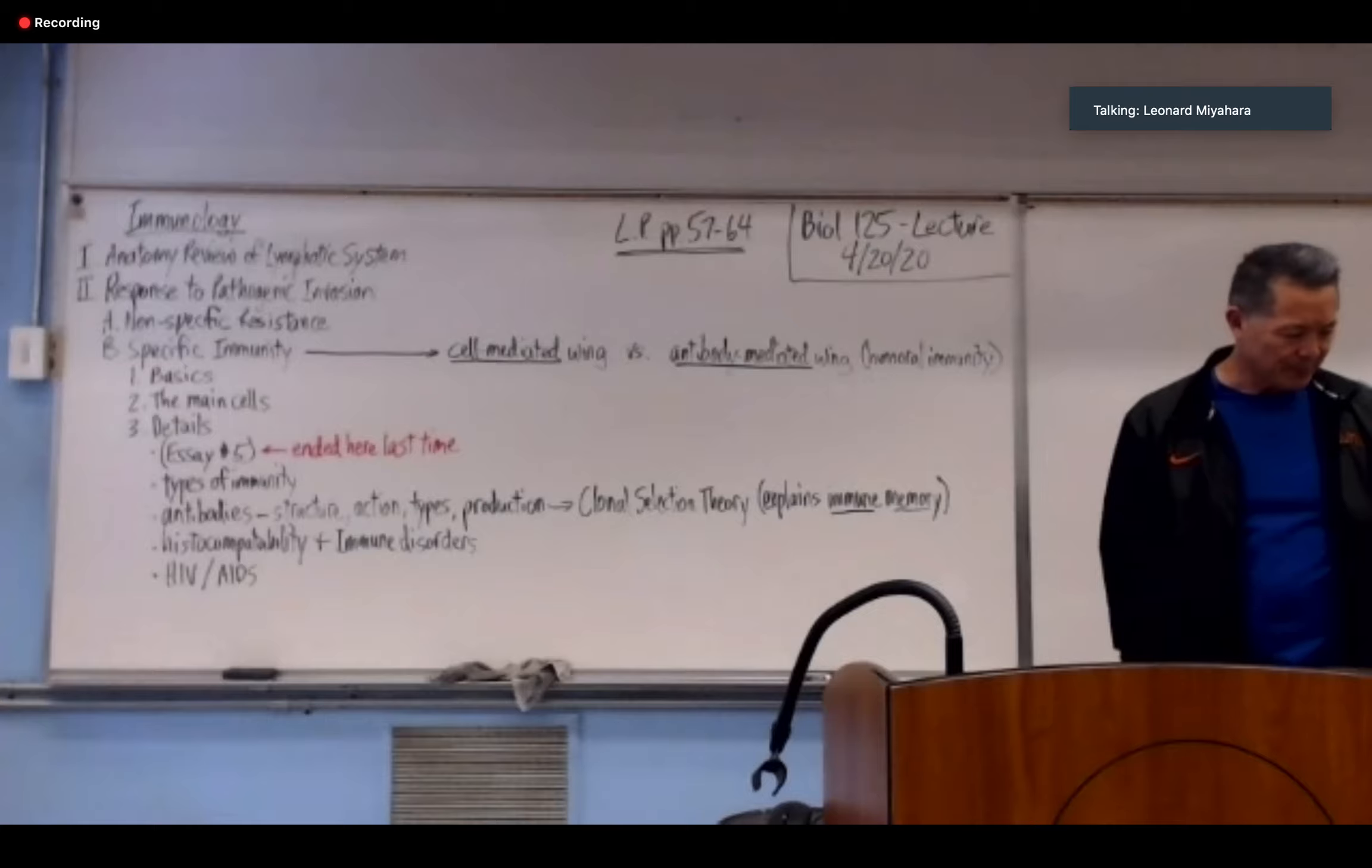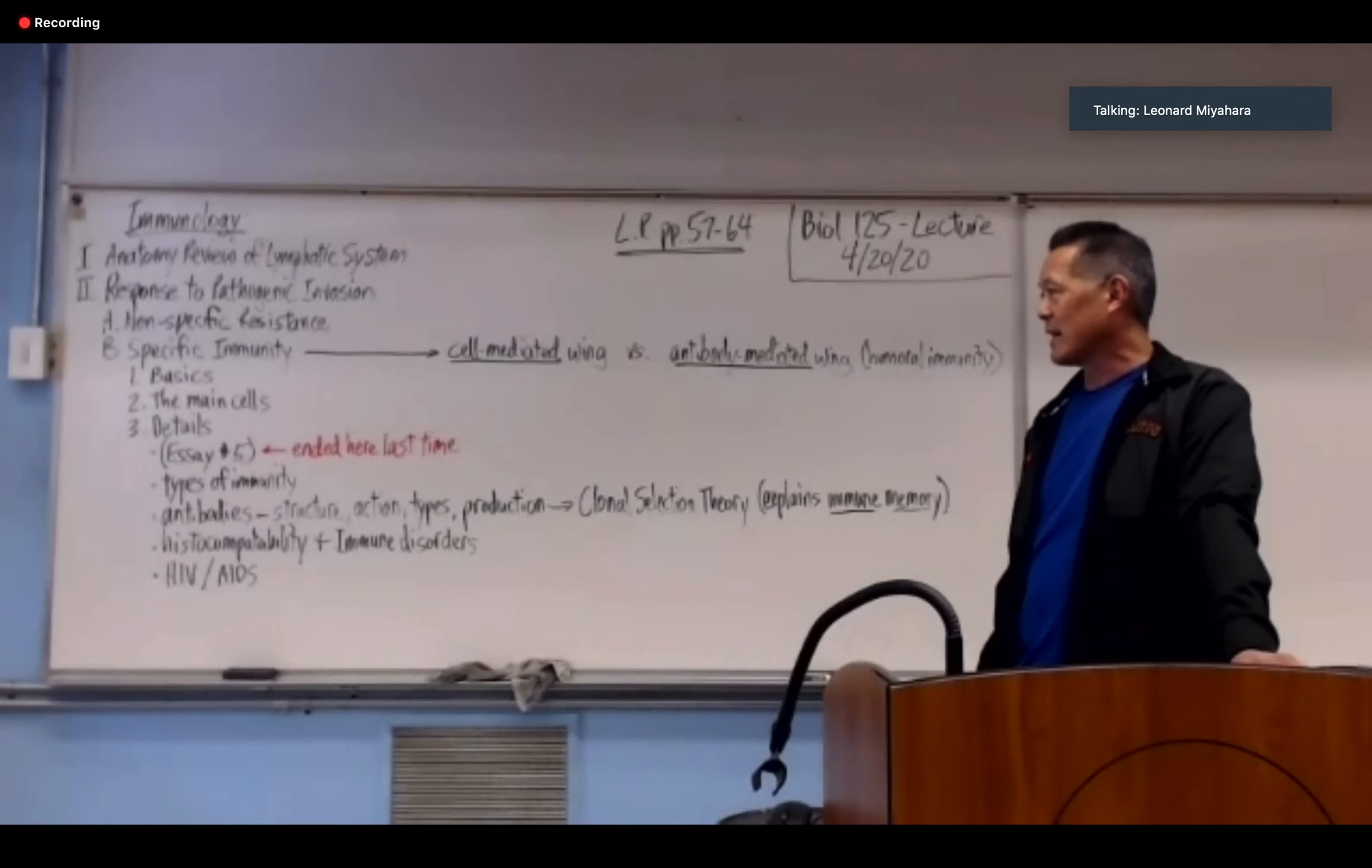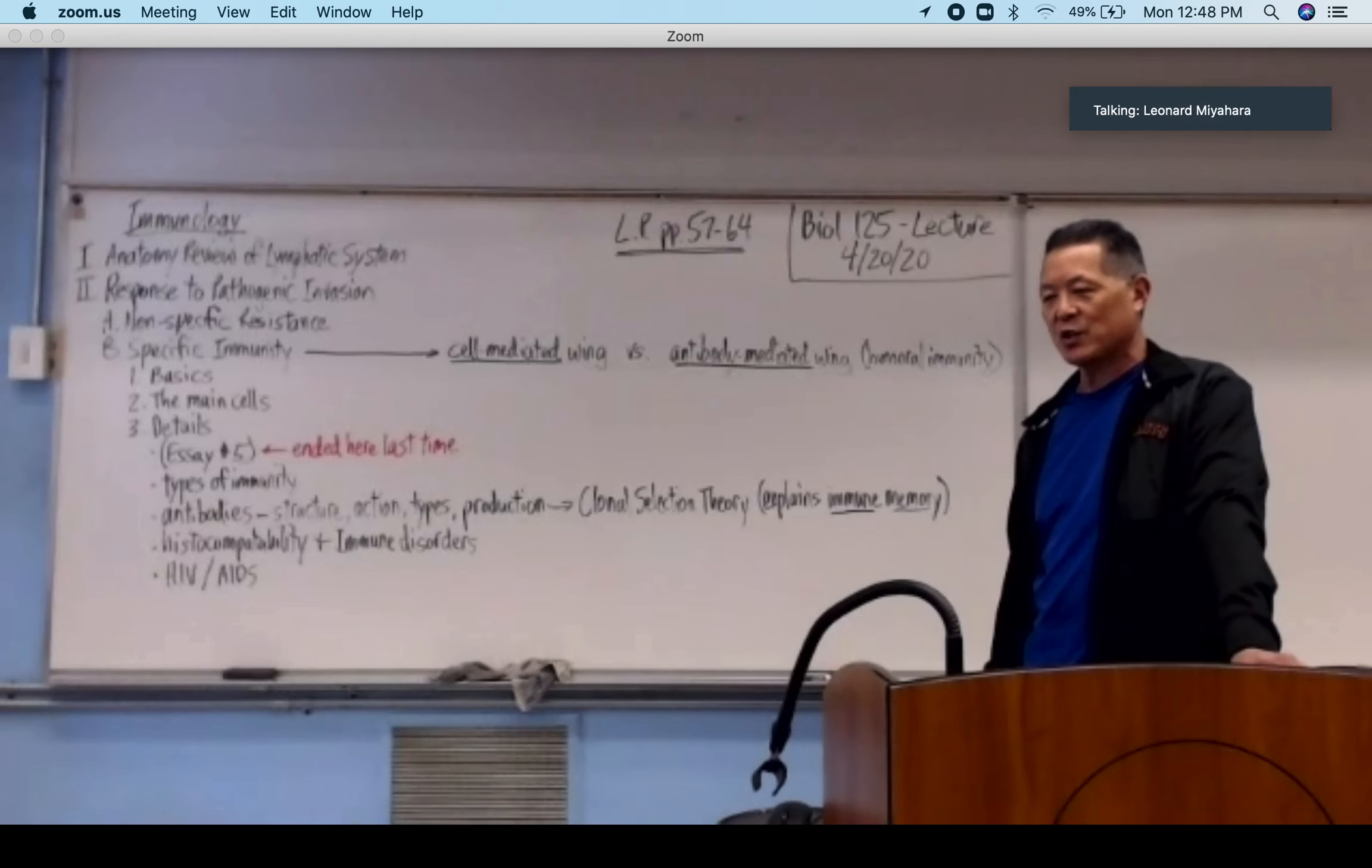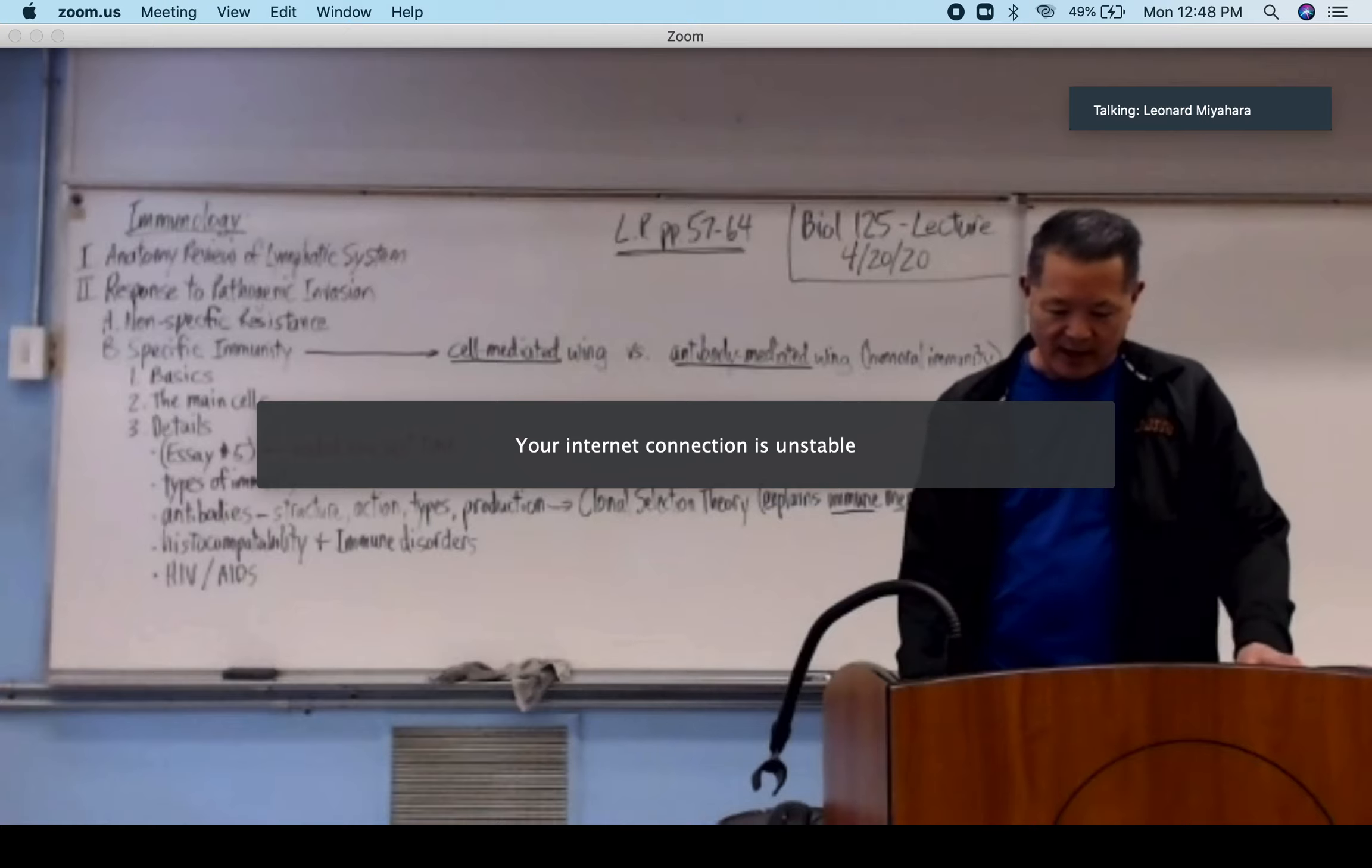We talked about B cells and T cells. There are three types of T lymphocytes and two types of B lymphocytes. T cells are cell-mediated wing and B cells are antibody-mediated wing, but the one cell that is in both is the helper T cell.